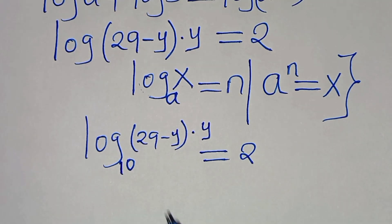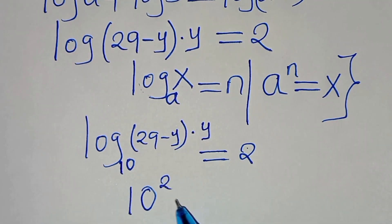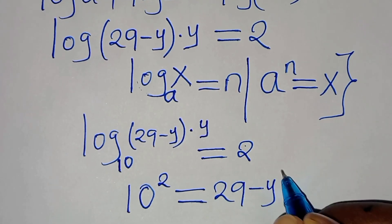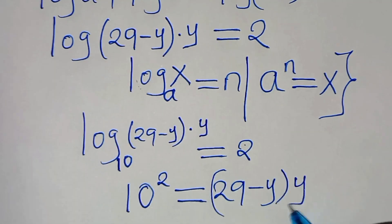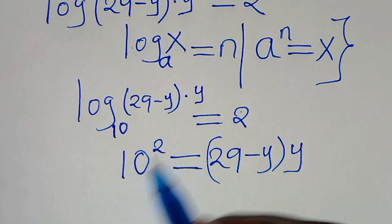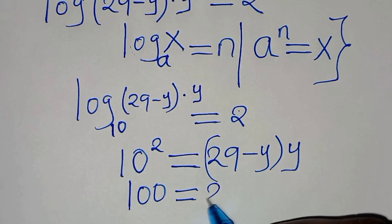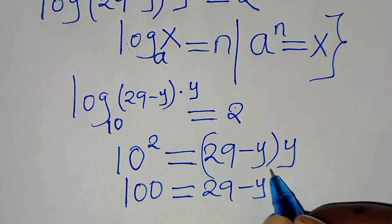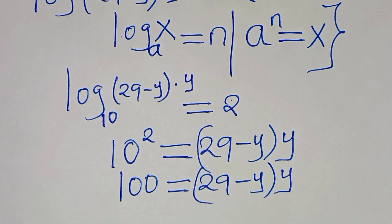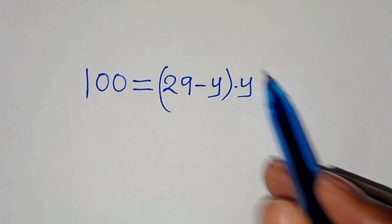So this means we can express this as 10 to the power of 2 equals (29 minus y) times y. This means 10 squared, which is 100, equals (29 minus y) times y.